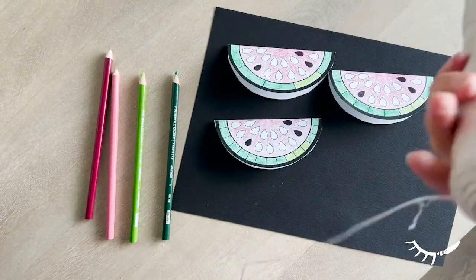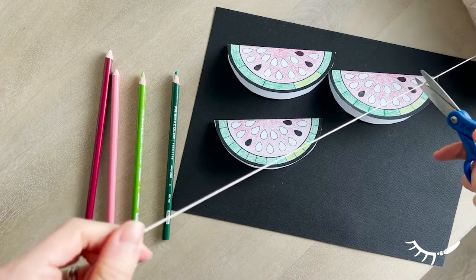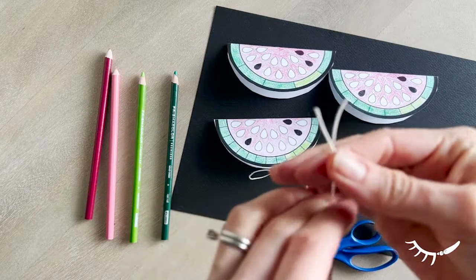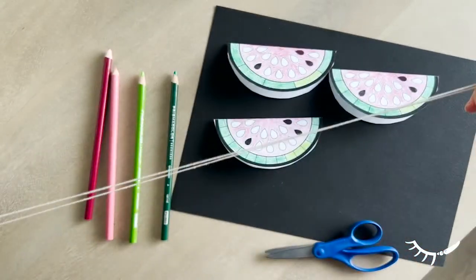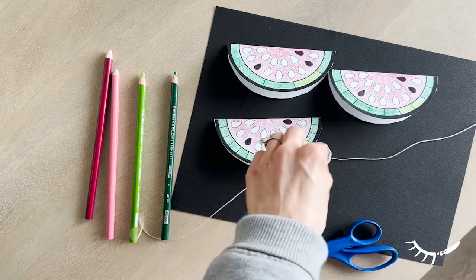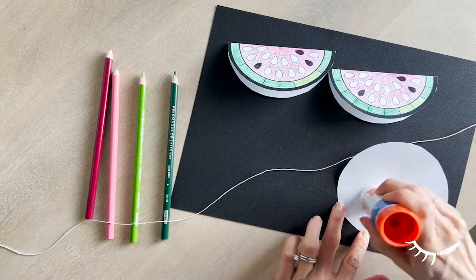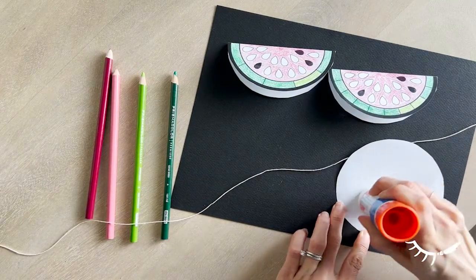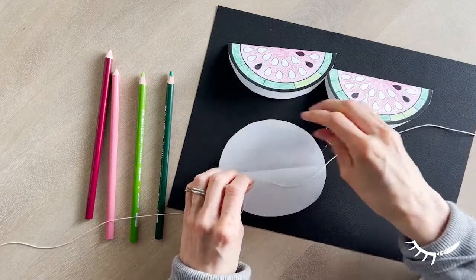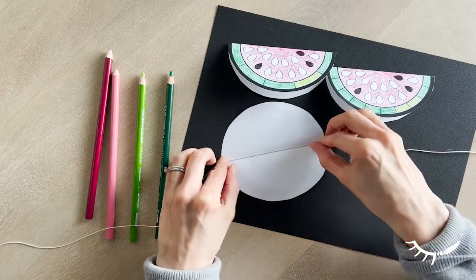Then cut a piece of string long enough to hold the three slices. Fold the string in half to find the middle. Open each slice, add glue to the inside, and then fold it around the string. Place the first piece in the middle of the string, and then place the subsequent two on either side.